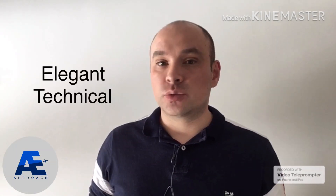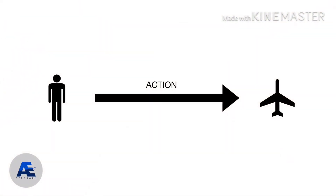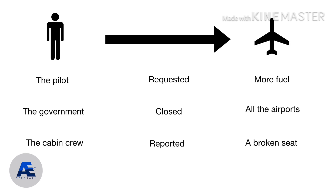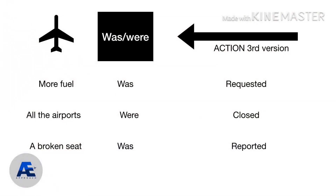In order to make an elegant and more technical report, we are going to use a new strategy. We will take phrases in which a person or object applies an action to another person or object and change them. We will use the object of the sentence, then 'was' or 'were' depending on appropriate use, and the action in its third form. For example: 'The pilot requested more fuel' becomes 'More fuel was requested.' 'The government closed all the airports' becomes 'All the airports were closed.' 'The cabin crew reported a broken seat' becomes 'A broken seat was reported.'